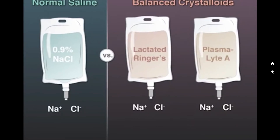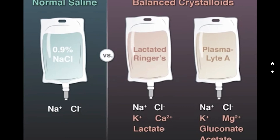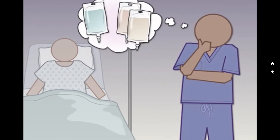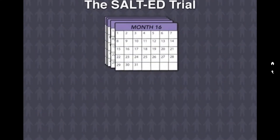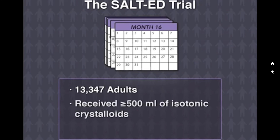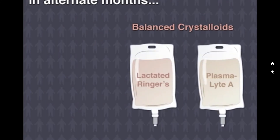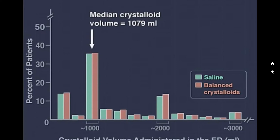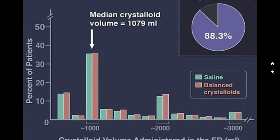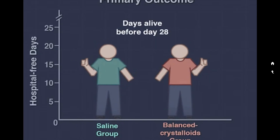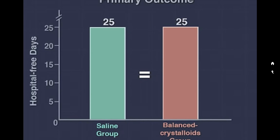Balanced crystalloid solutions, such as lactated Ringer's and PlasmaLyte A, have more physiologic electrolyte concentrations and may have less negative impact on acutely ill patients. In the single-center pragmatic unblinded SALT-ED trial, investigators tested whether the composition of crystalloids affected outcomes in non-critically ill patients. Over 16 months, the trial enrolled 13,347 adults who received 500 mL or more of isotonic crystalloids in the emergency department and were subsequently hospitalized but not in an ICU. The median crystalloid volume received was 1,079 mL, with 88.3% of patients receiving only the assigned fluid. The primary outcome — hospital-free days, defined as days alive after discharge before day 28 — was the same in both groups: 25 days versus 25 days.